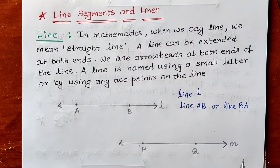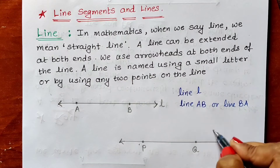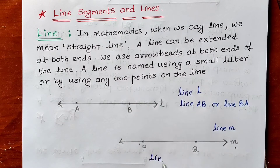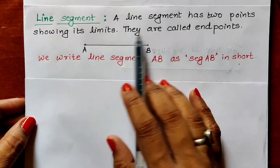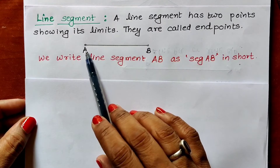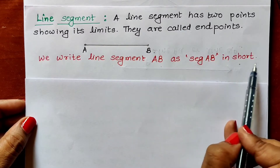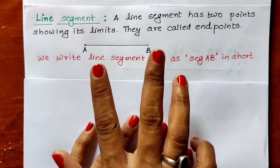Similarly, we can see a second line. Its name can be written as line M using the small letter, or using two points P and Q it can be written as line PQ or line QP. Now let us see the definition of line segment. A line segment has two points showing its limit — they are called endpoints. We can see two endpoints: point A and point B. We write line segment AB as seg AB in short, or seg BA.